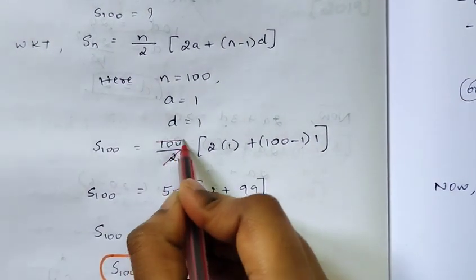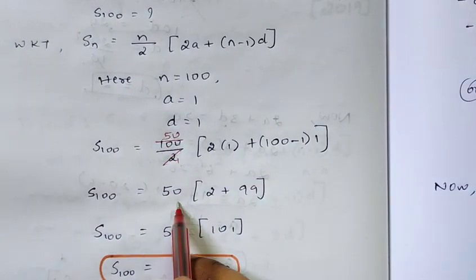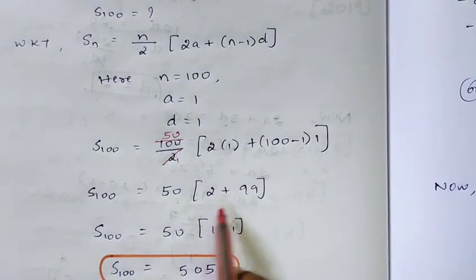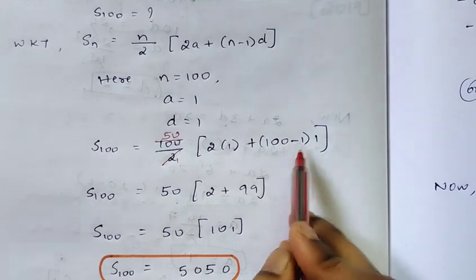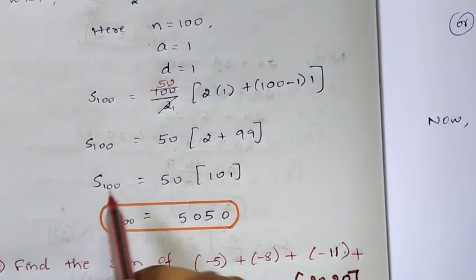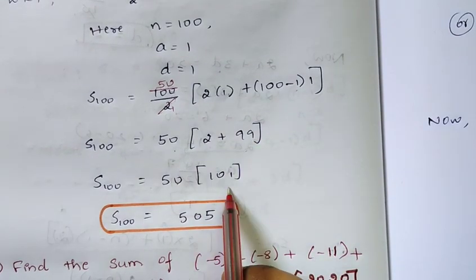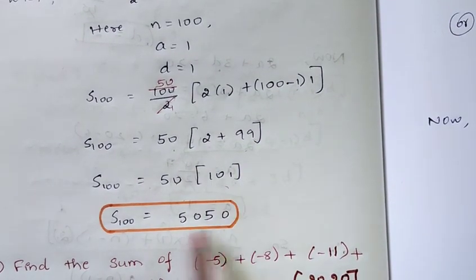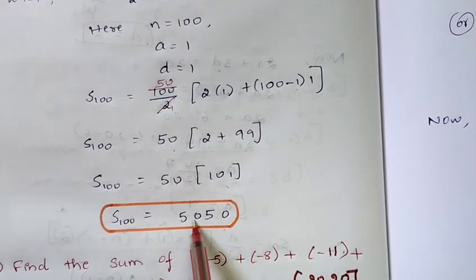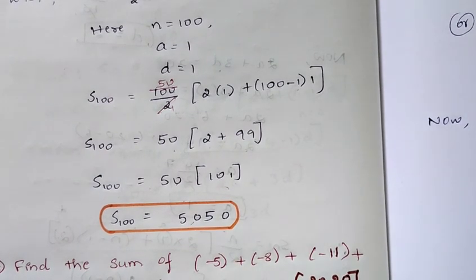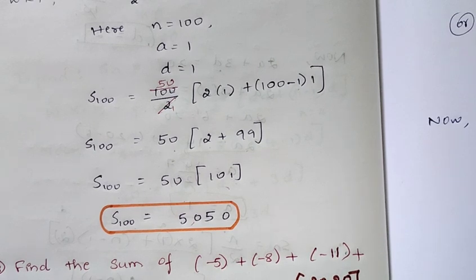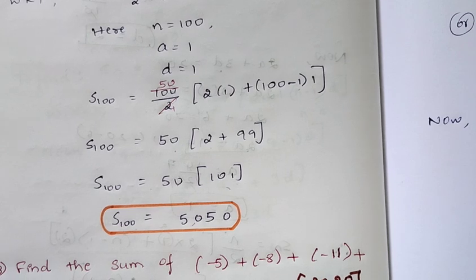Simplifying: 100 divided by 2 gives 50. So we get 50 into 2 plus 99, which is 50 into 101. After multiplication, S100 is equal to 5050. So the sum of first 100 natural numbers is 5050. It is very simple — just apply the formula.